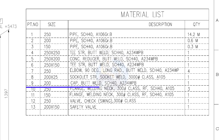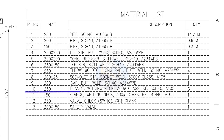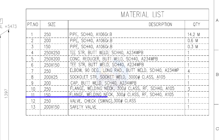Item number 9: cap, butt welded, schedule 40. Quantity: 1. Item number 10: 250 NB, weld neck flange, class 300 pound, raised face, schedule 40. Quantity: 3. Item number 11: 150 NB, weld neck flange, class 300 pound, raised face, schedule 40. Quantity: 1.